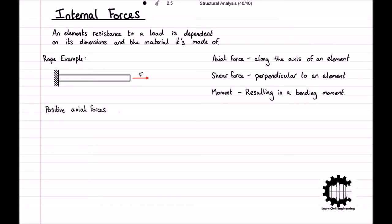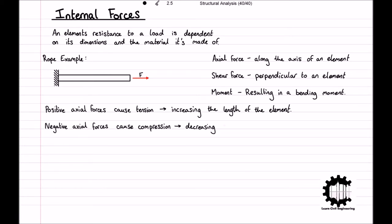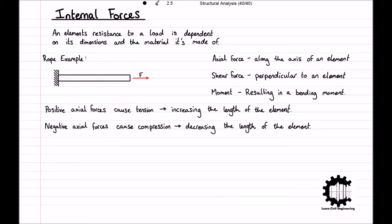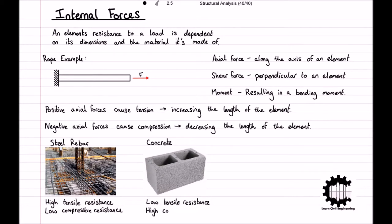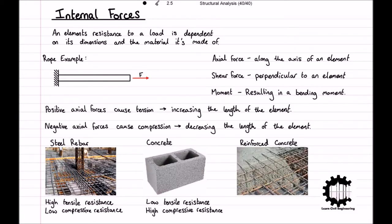Within structural analysis, positive axial forces are tensile forces leading to an increased length of the element, and so it follows that negative axial forces are compressive forces which tend to reduce the length of an element. The pulling action applied to our rope is a tensile force, so the internal force within the rope is a positive axial force. The rope can resist a tensile force to a certain extent, however it could not resist a compressive force at all. Within civil engineering, steel rebar is a common example: it has a high tensile strength but a relatively low compressive strength. On the other hand, a block of concrete will have a very low tensile strength and a very high compressive strength, and this is why steel rebar is used to strengthen concrete.